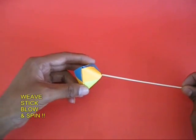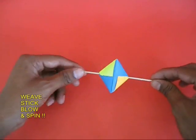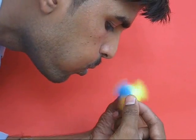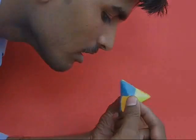Weave a stick between two opposite holes. It should be slightly loose so that you can turn it and if you hold the stick and you blow then the tetra spins.